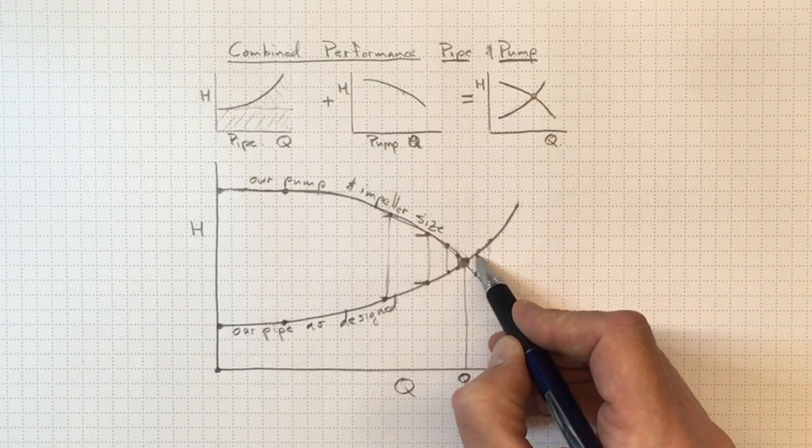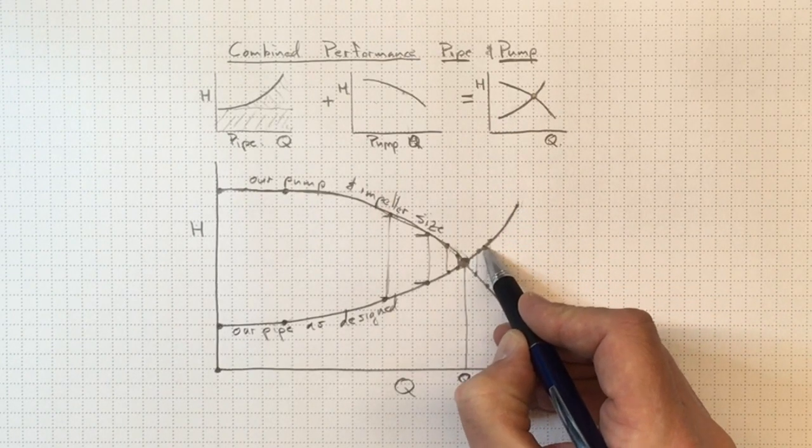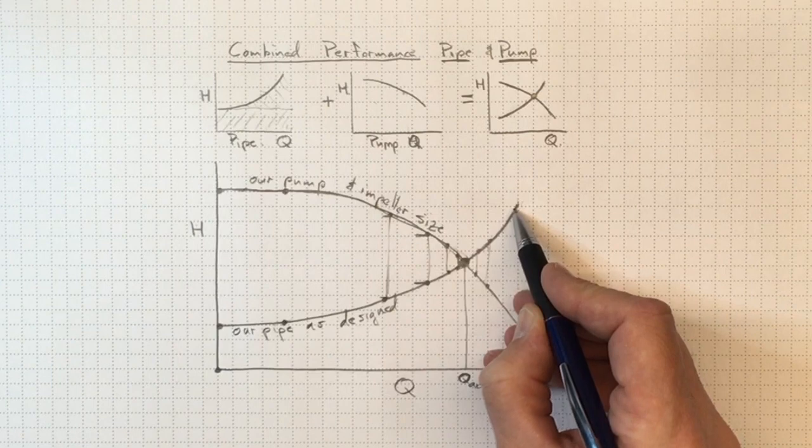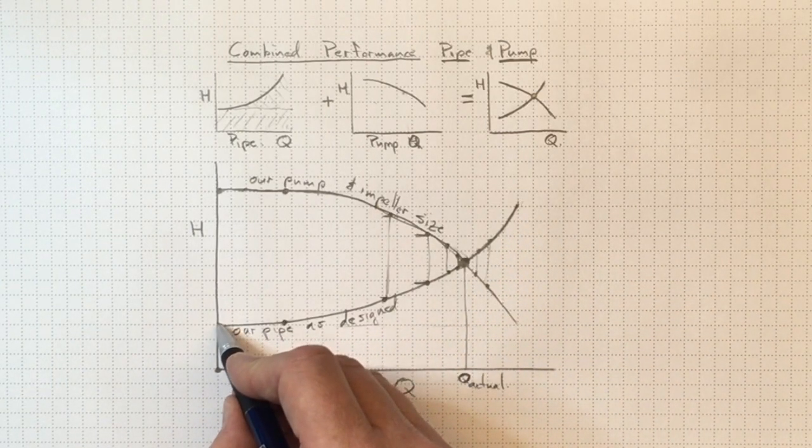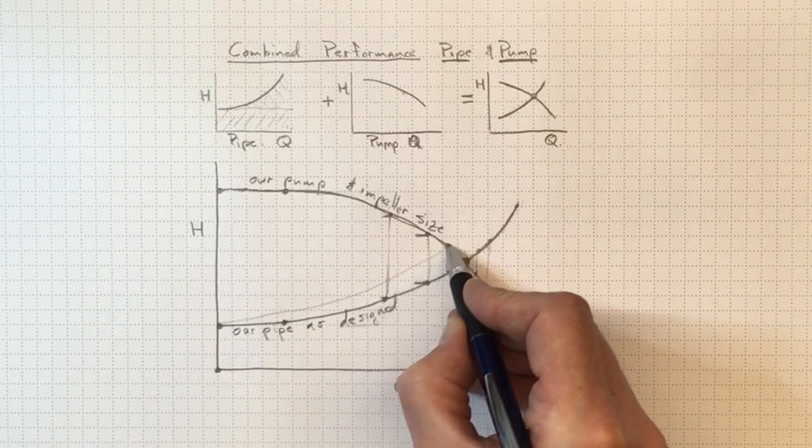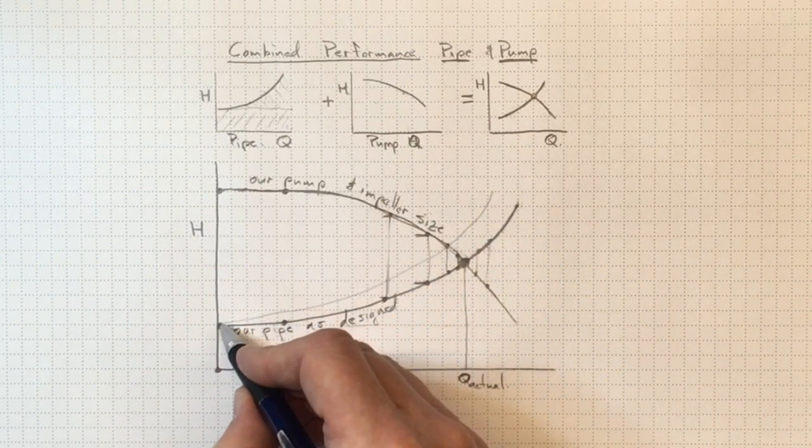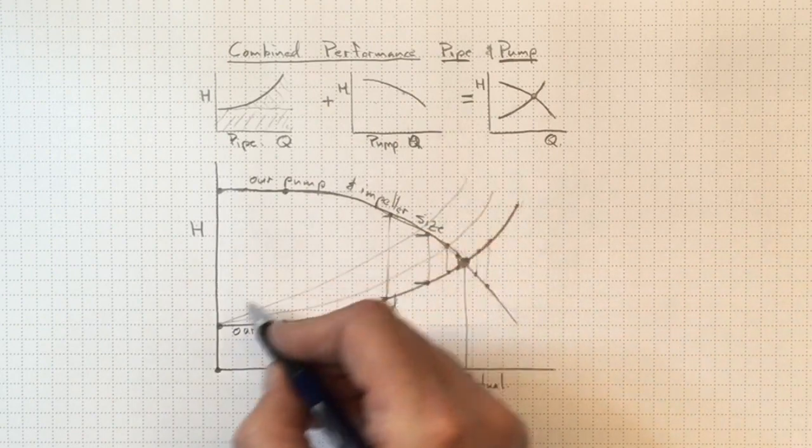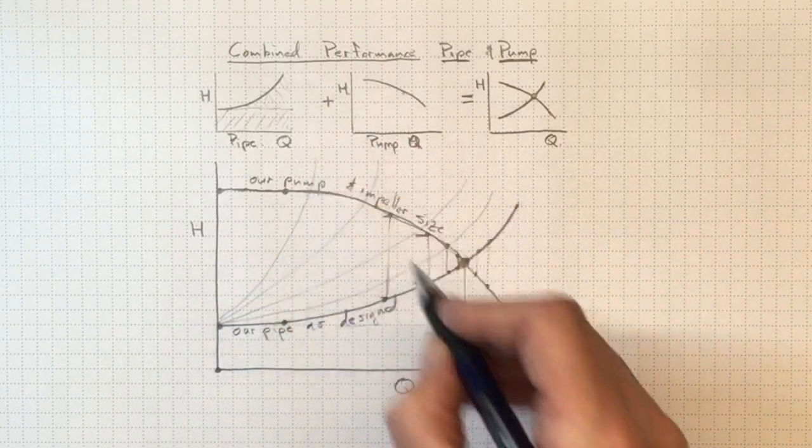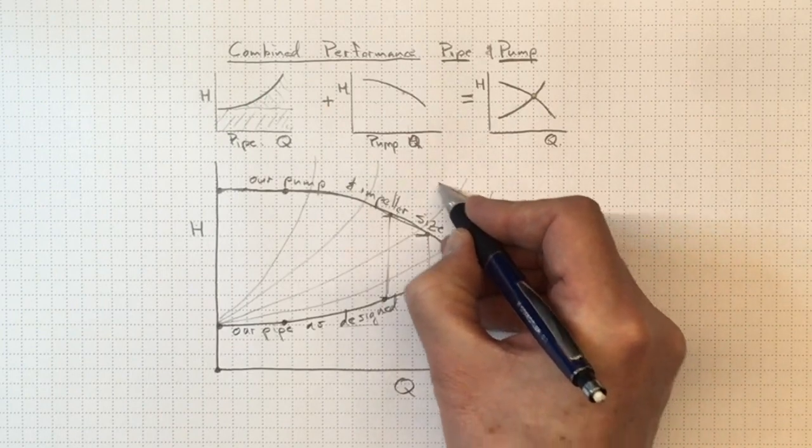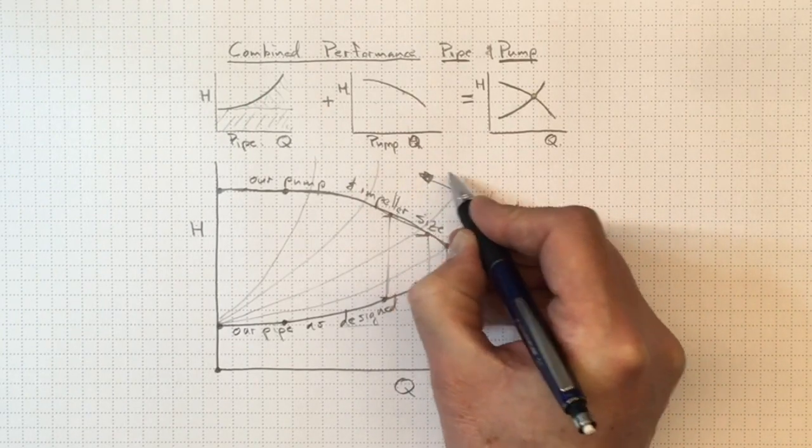But if we've got a piping system that's got a control valve in it, we can always increase the resistance in the piping system. So we'll start with the same elevation difference that we have to overcome, but we might be able to start closing down a valve and get a response curve like that, or like that, or like that, as we keep closing up the valve a little further. So there we are closing a valve.